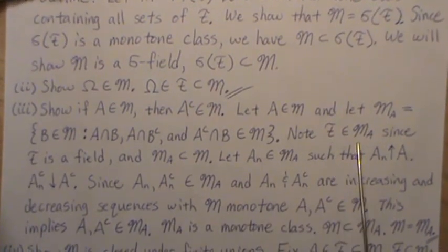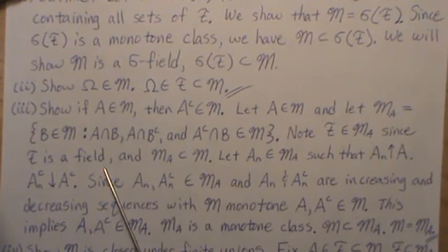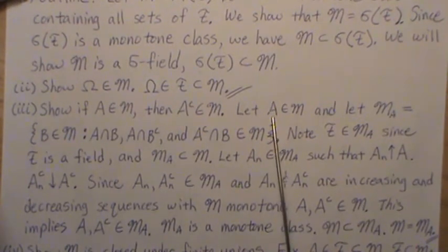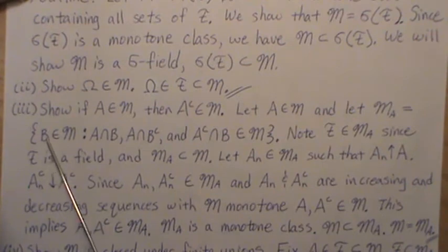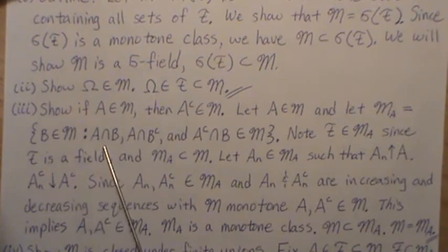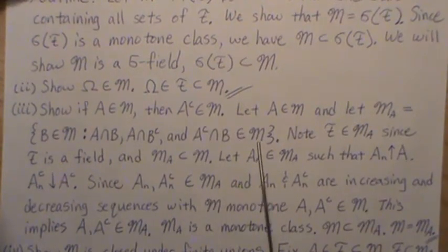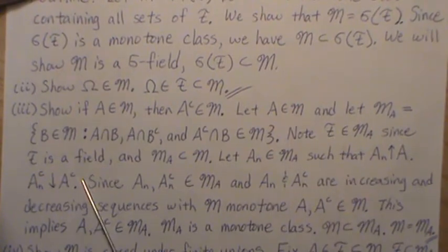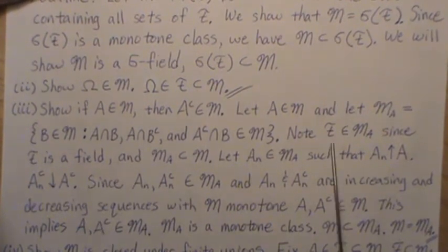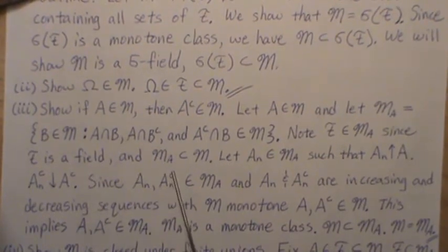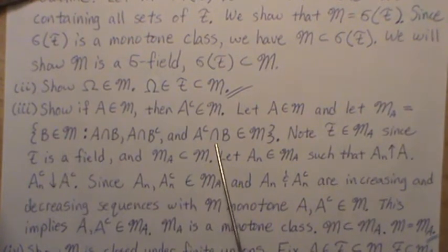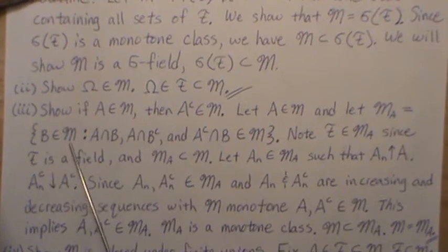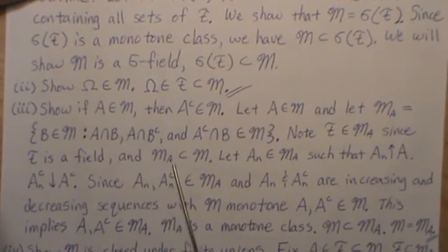Note that F is a subset of M(A), since F is a field. When we cycle through all sets in M, we reach the ones in F, and since F is a field those sets satisfy the required intersections, making F ⊆ M(A). Also, M(A) is a subset of M by construction, since we're defining M(A) on conditions that may not include all sets of M.